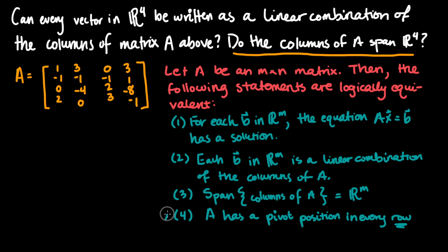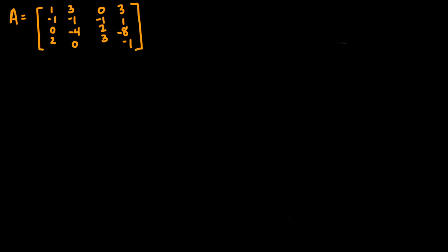Statement four is the easiest one to check, but we must be aware of all of them. Do the columns of A span R4? That's the same as asking whether every vector in R4 can be written as a linear combination of the columns of A, whether AX = B has a solution for each B in R^M, and whether A has a pivot position in every row. So all we have to do is row reduce the matrix to see if it has a pivot position in every row.